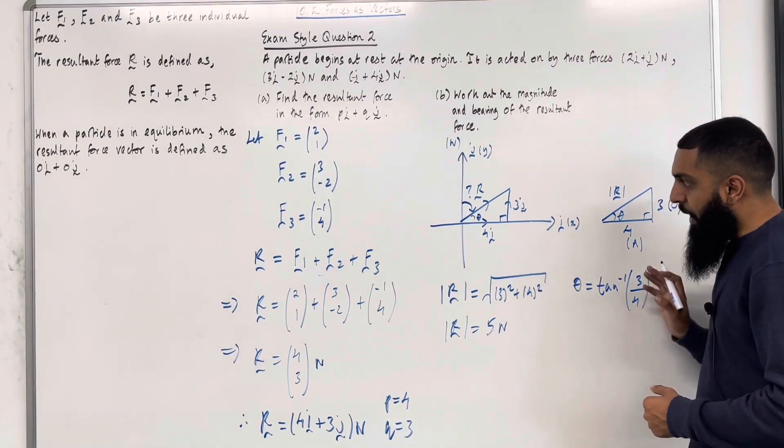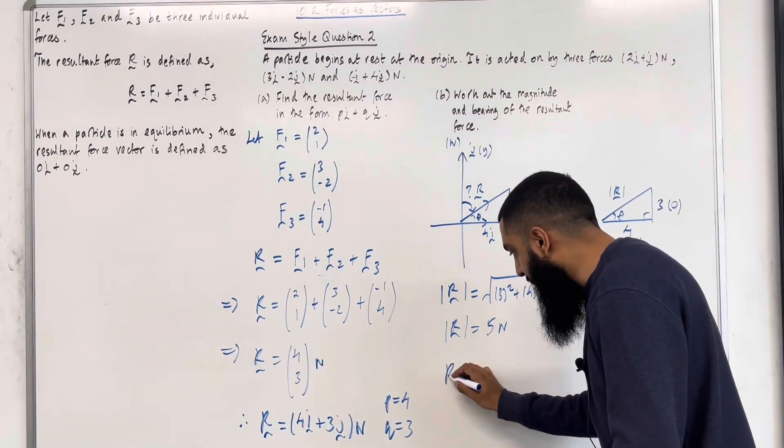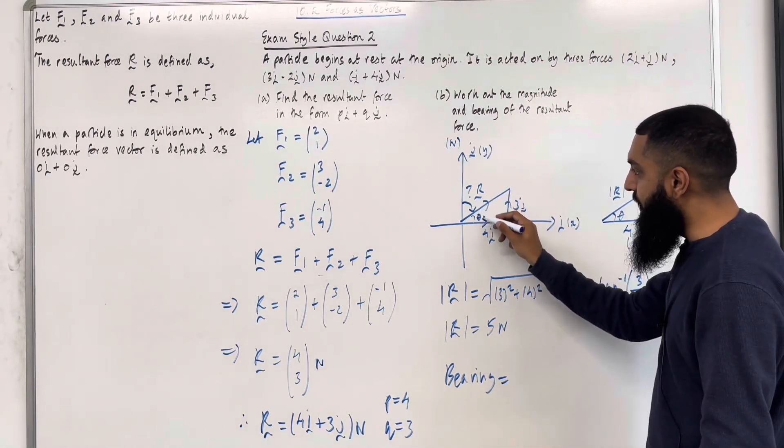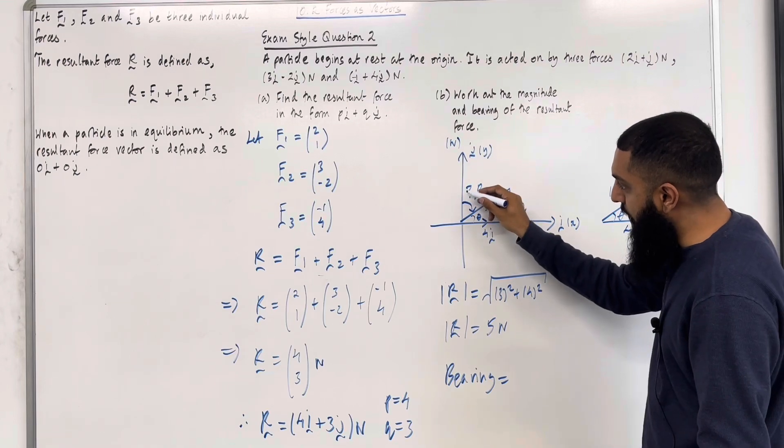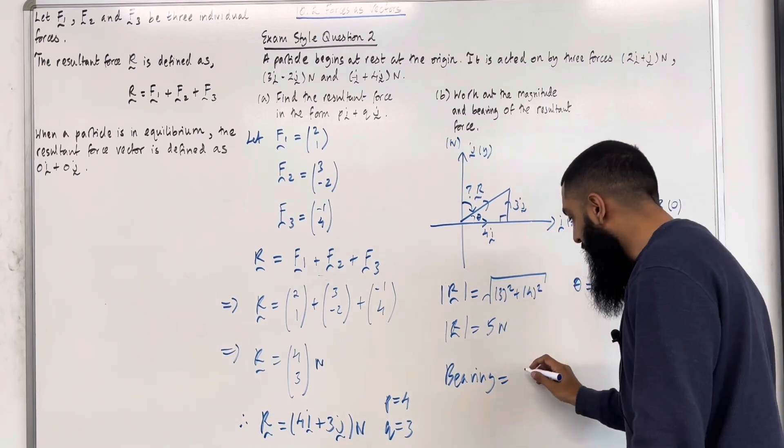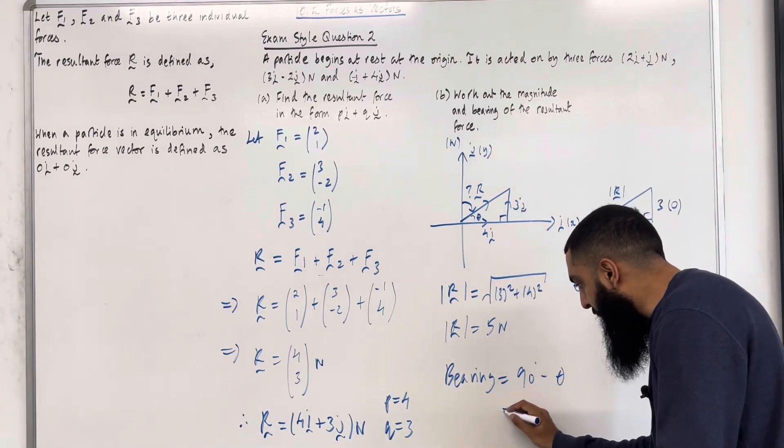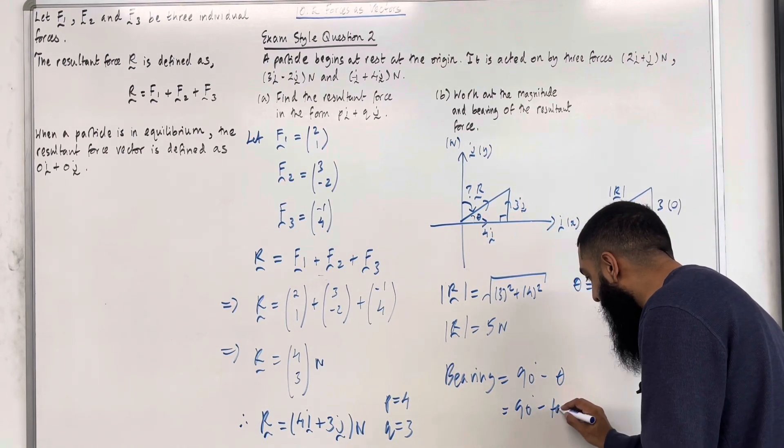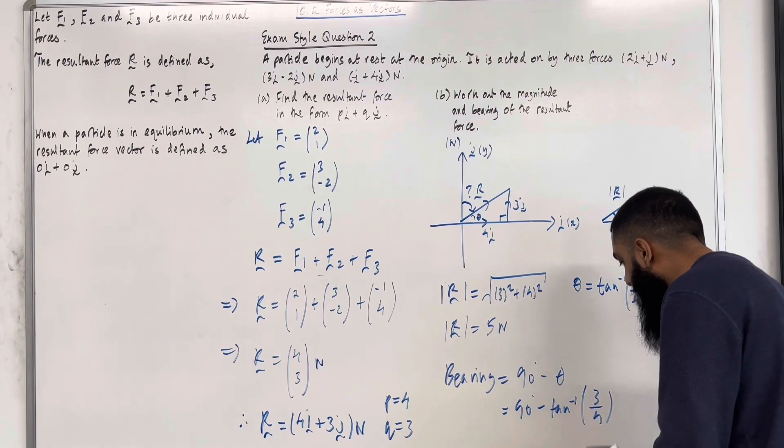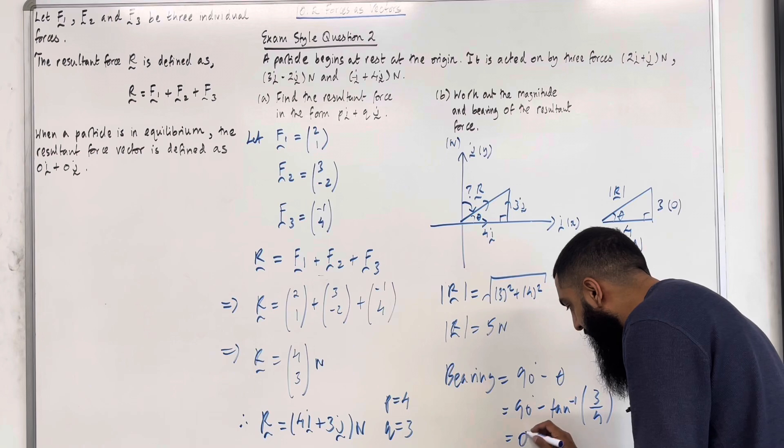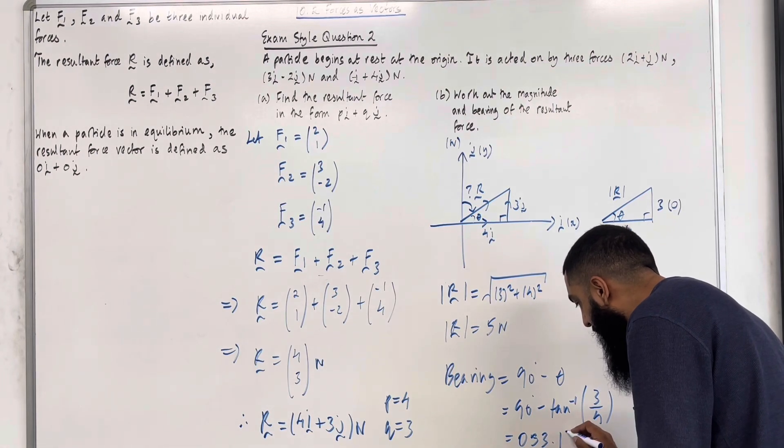Now, to work out the bearing of the resultant force, I can see that this entire angle here is 90 degrees. To work out that question mark there, the bearing, I simply do 90 degrees take away theta. So, that would be 90 degrees take away tan inverse of 3 over 4. To one decimal place, this bearing would be 053.1 degrees.